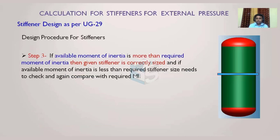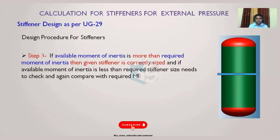In Step 3, we compare the required moment of inertia with the available moment of inertia. For example, if the required moment of inertia is 100 cm⁴ — remember, moment of inertia has units of mm⁴, cm⁴, in⁴, or ft⁴ — and we have chosen a stiffener size such as 10×50, and the available moment of inertia of the combined shell and stiffener section is only 80 cm⁴, then it does not satisfy the requirement.